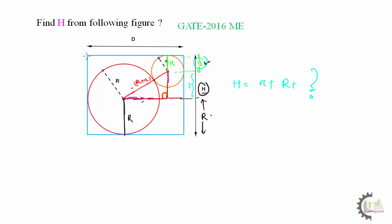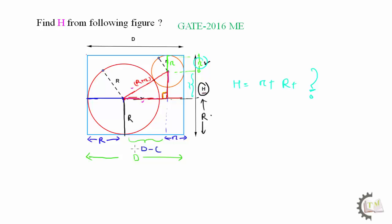The total horizontal width is given as D. The horizontal distance from the center of the big circle to the right wall is R, because it is the radius of that circle. Similarly, the distance from the center of the small circle to the right wall is small r. The missing horizontal distance between the two projected centers is D minus (R plus r). This horizontal distance equals the base of the right angle triangle.